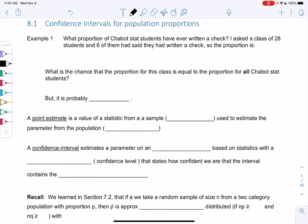Section 8-1, confidence intervals for population proportions. So we're going to start off with proportions and then we'll go into mean land later. So we're in proportion land.